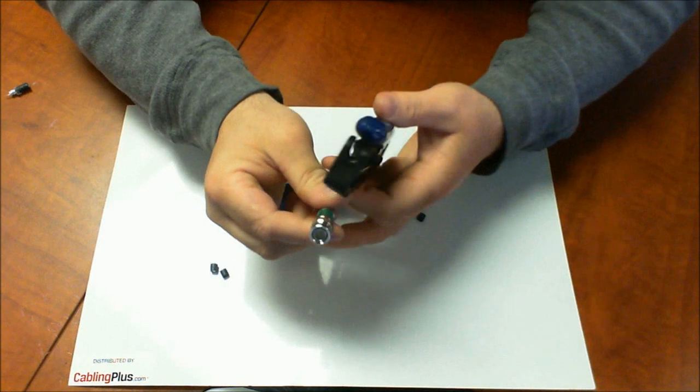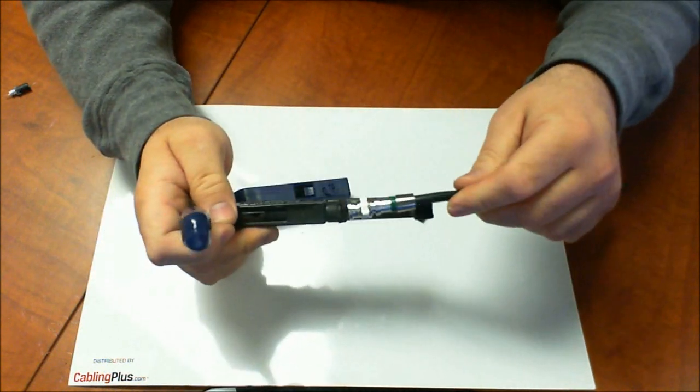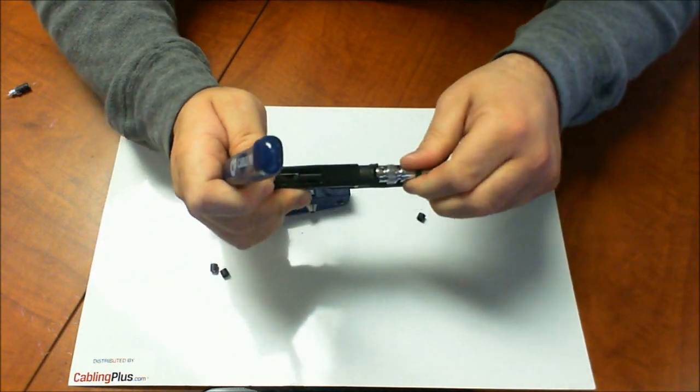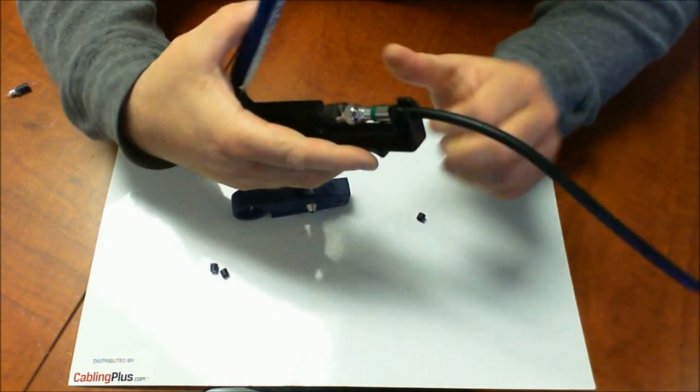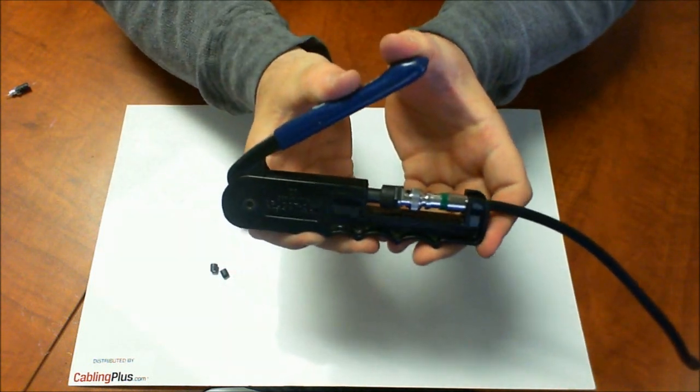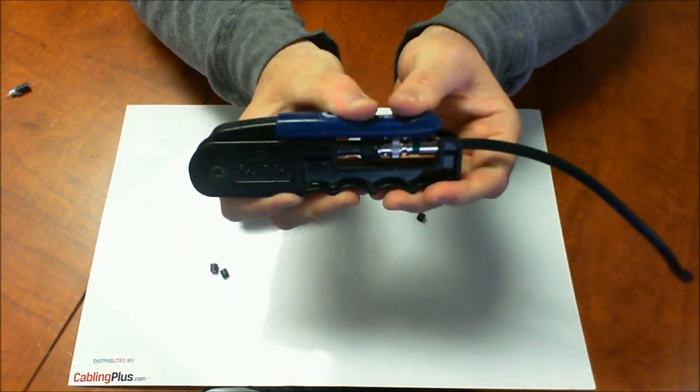Now I'm going to use the tool and compress this. Just pop it right in there, and then just squeeze that. You're going to see the sleeve compress down.